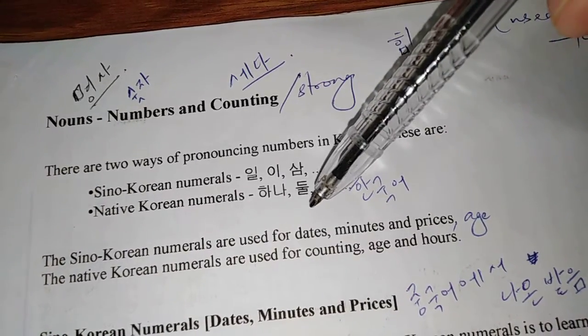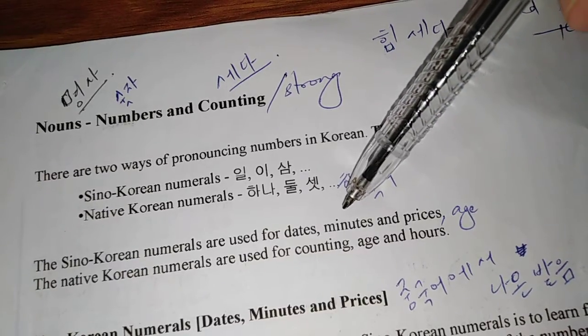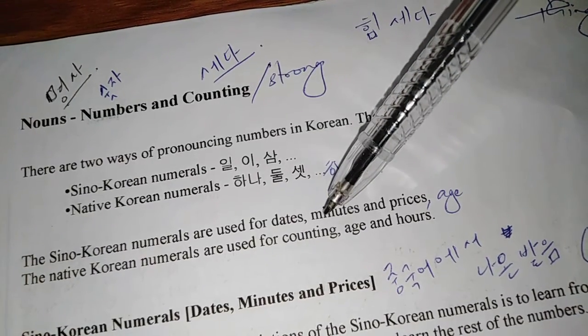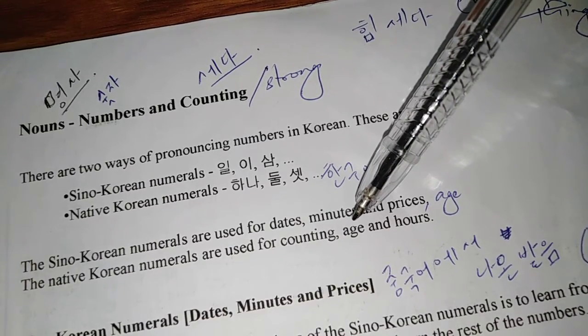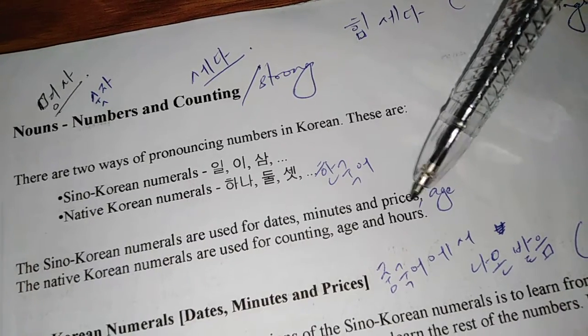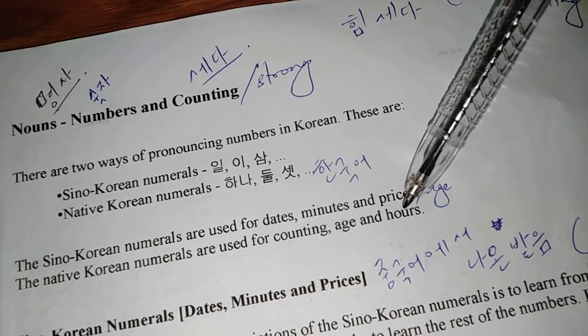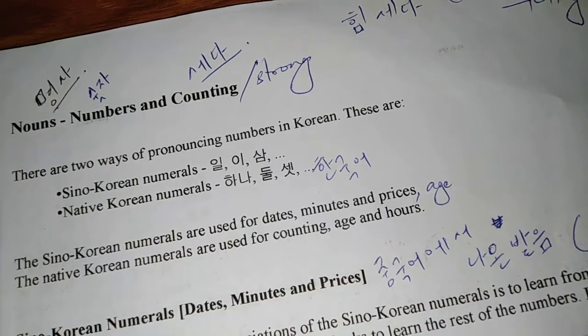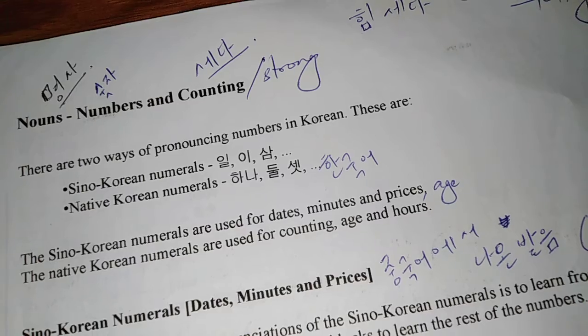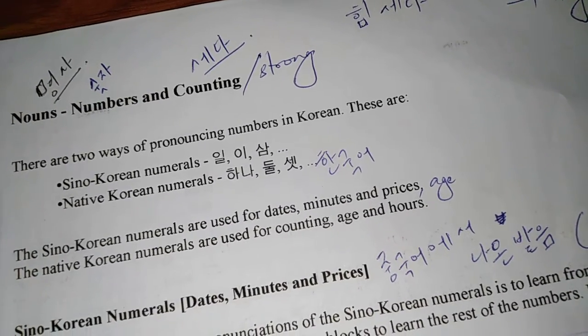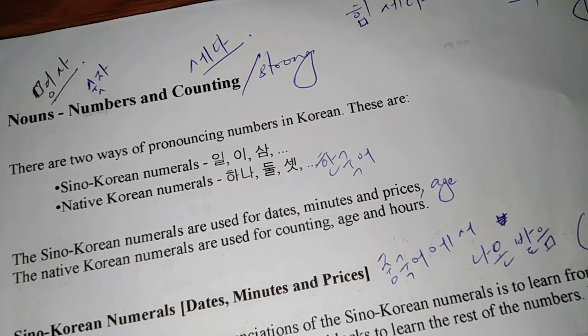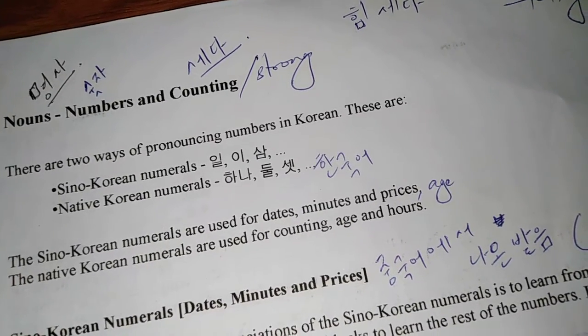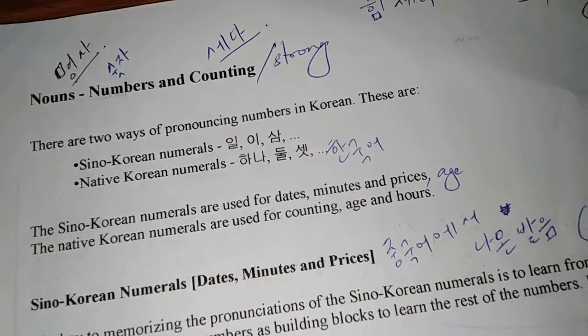Sino-Korean and Native Korean numerals are used for different purposes. Sino-Korean numerals are usually used to indicate dates, minutes, prices, and age. Native Korean numerals are usually used to count stuff. Native Korean is also used to denote age and hours, while Sino-Korean is used for minutes. So when you are saying the time, both Native Korean and Sino-Korean numerals are involved at the same time. If you want to say the time fluently in Korean, you need to be adept with both Sino-Korean and Native Korean numerals.